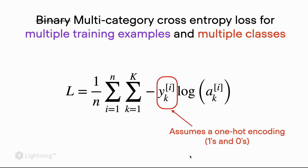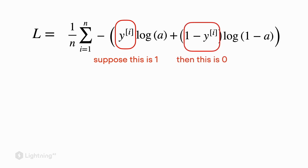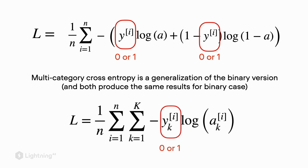Taking one step back: in the logistic regression case for binary classification we have either a zero or one for y. If y equals one, then one minus one equals zero, so the right-hand term cancels out because zero times something is zero. The same thing happens with the multi-category cross entropy loss — for each training example we have one case where y is one and all other cases are zero, so those terms cancel out.